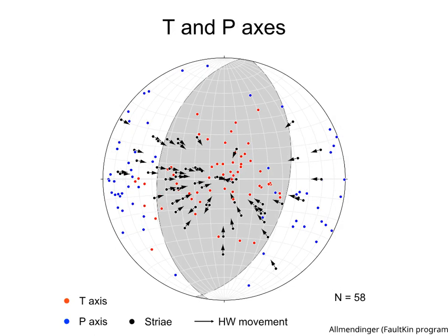If we have a population of faults formed during the same geologic event, we can plot their striae, slip vectors, T, and P-axes, as indicated in the figure. We can then color the quadrant on which most of the T-axes are.